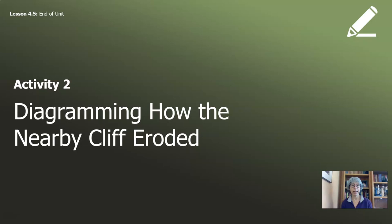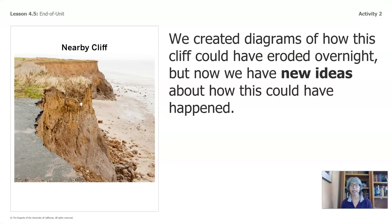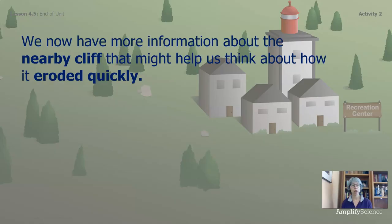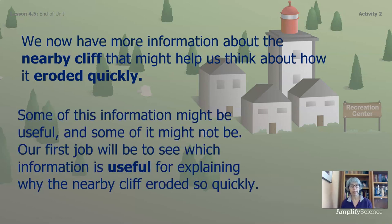All right, this is the last activity in part one of the last lesson. Let's do a little bit of diagramming. We created diagrams of how this cliff could have eroded overnight, but now we have new ideas about how this could have happened. We now have some more information about the nearby cliff that might help us think about how it eroded quickly. Some of this information might be useful and some of it might not be. Our first job will be to see which information is useful for explaining why the nearby cliff eroded so quickly.